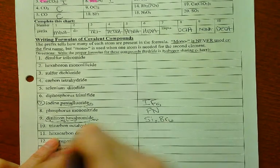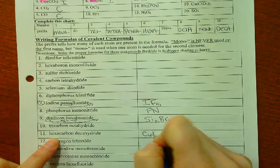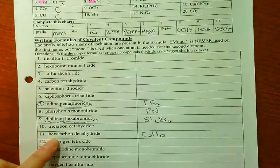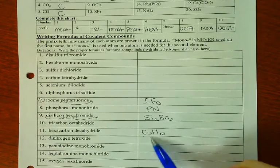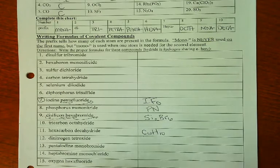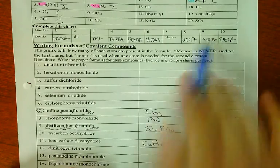Hexacarbon decahydride: C6, deca is 10, and hydride is hydrogen, so C6H10. Hopefully this is easier for you than ionic was, as soon as you get these prefixes memorized.